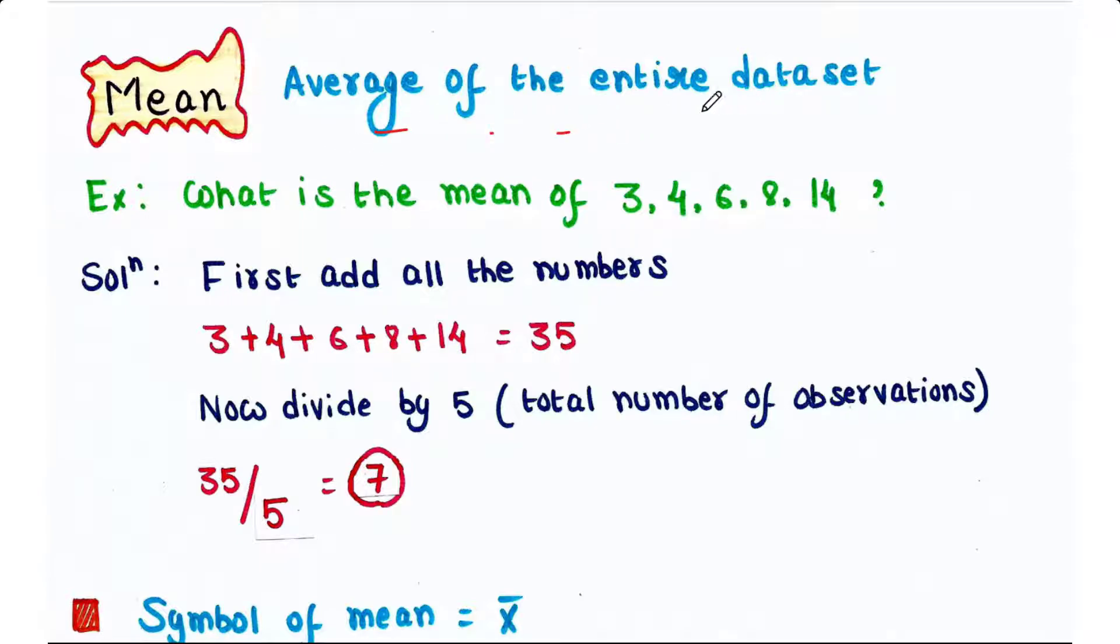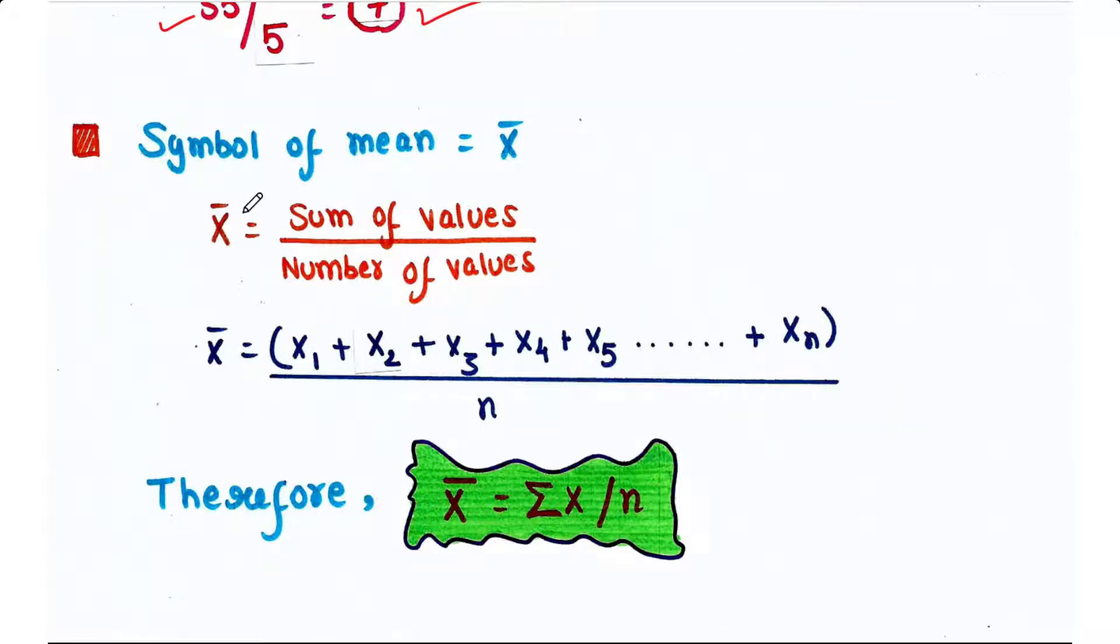Let's see an example. So what is the mean of 3, 4, 6, 8, 14? First, add all the numbers. So 3 plus 4 plus 6 plus 8 plus 14 is equal to 35. Now divide it by 5, because total number of observations is 5. So 35 by 5, we will get 7. So 7 is the mean here.